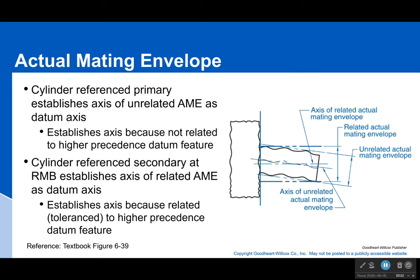Datum features are always connected to the true geometric counterpart, but that was for a flat surface. We're moving into features of size now, so how does that work? It's not about connecting perfectly to a flat surface.